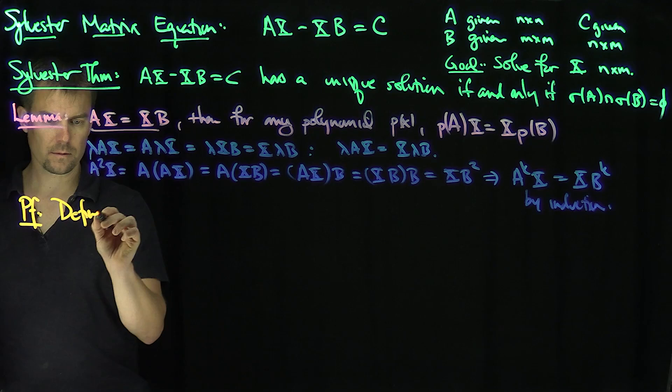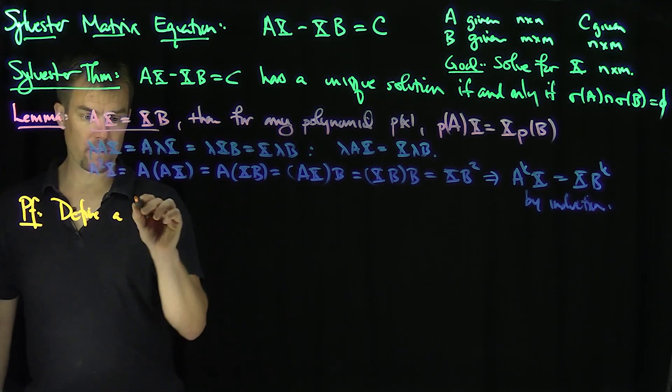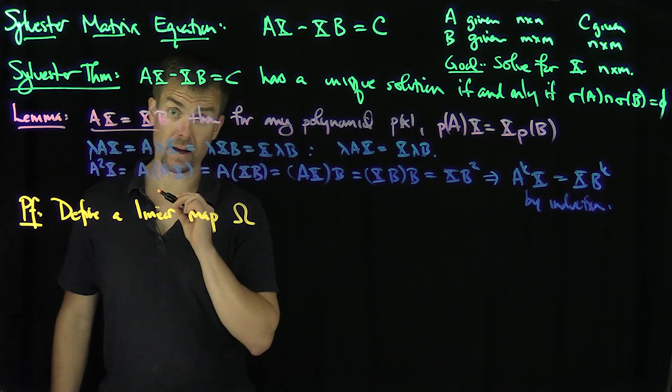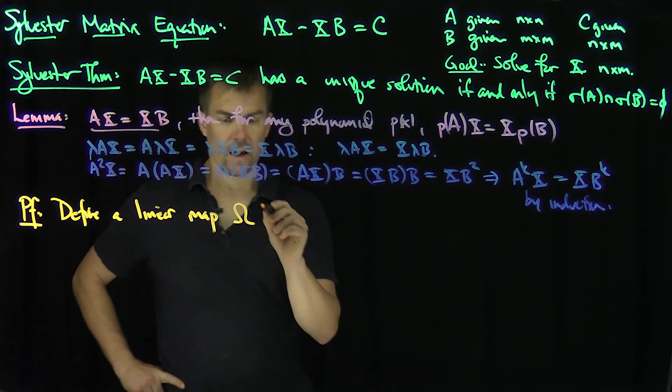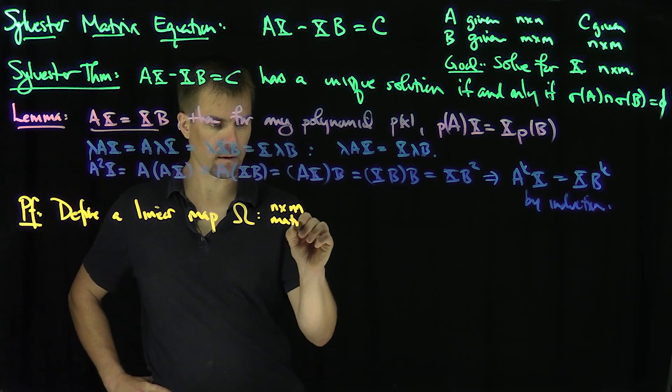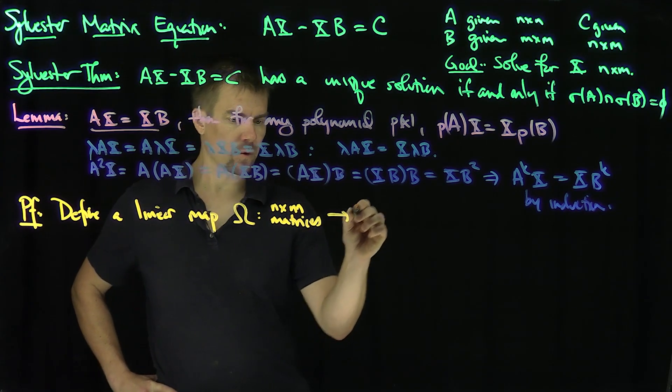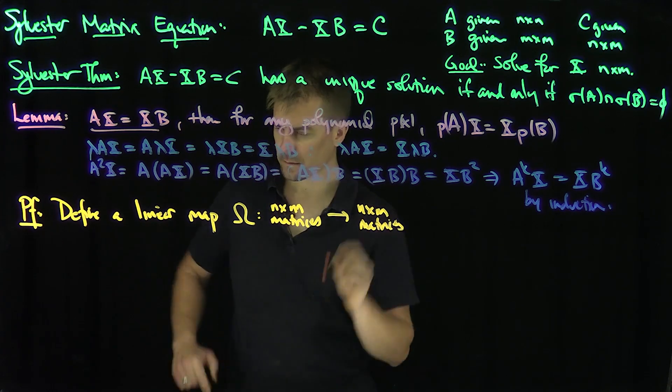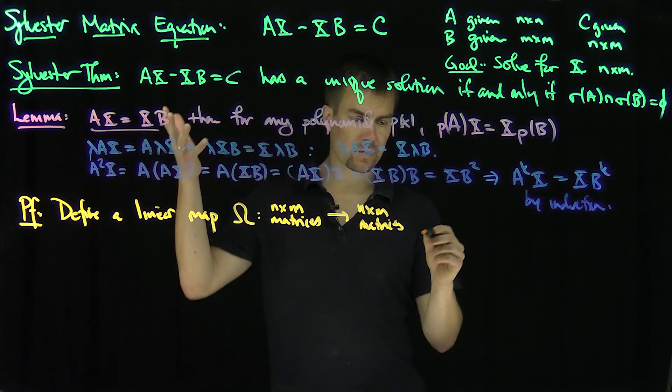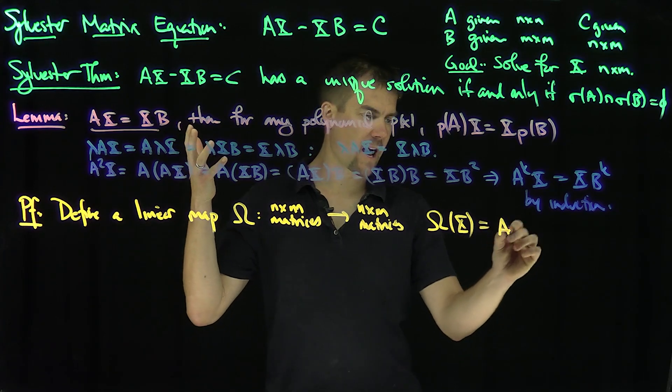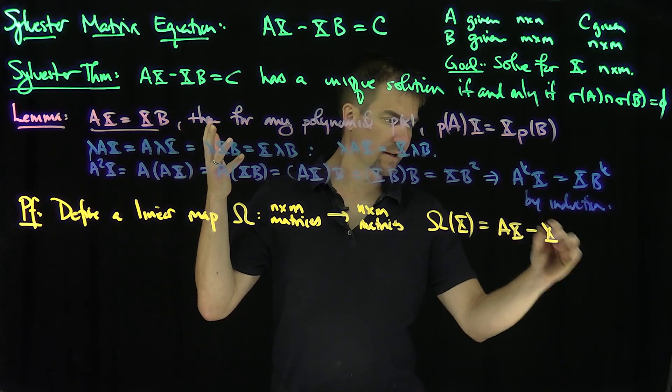Define a linear map omega. Omega is going to map n by m matrices into n by m matrices. What's it going to do?